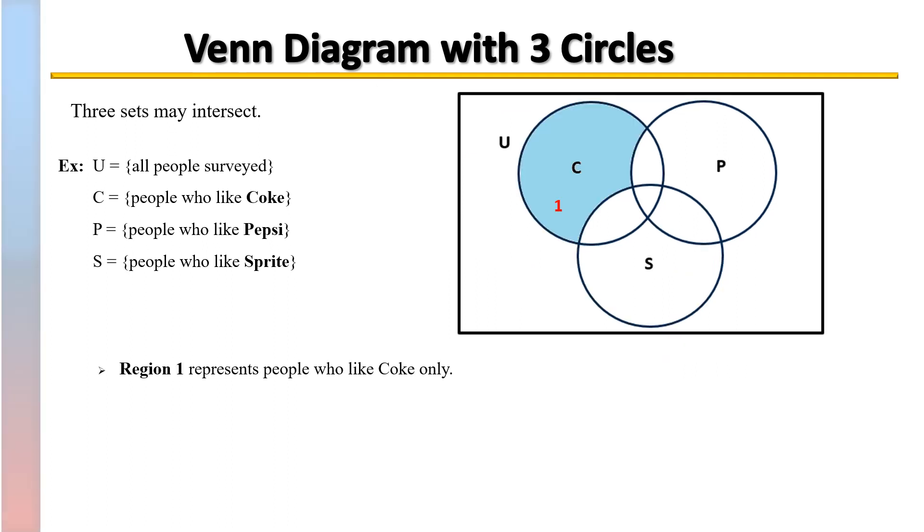Region 1 represents all the people who like Coke only. They like Coke, they don't like Pepsi, and they don't like Sprite, they just like Coke.